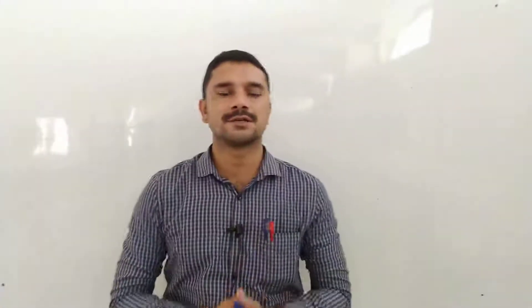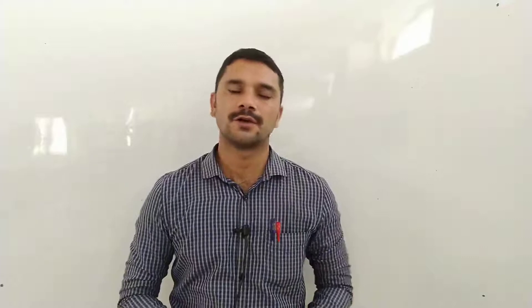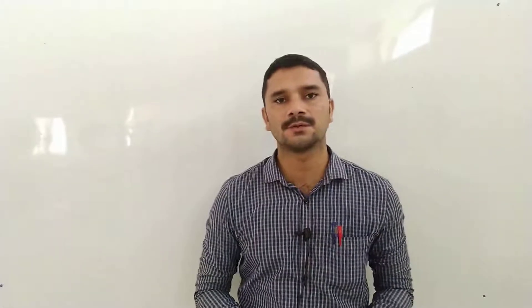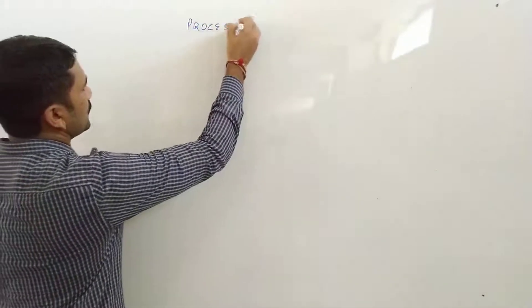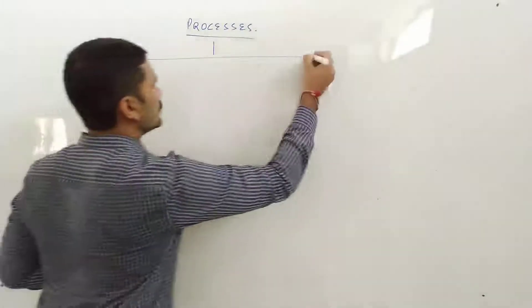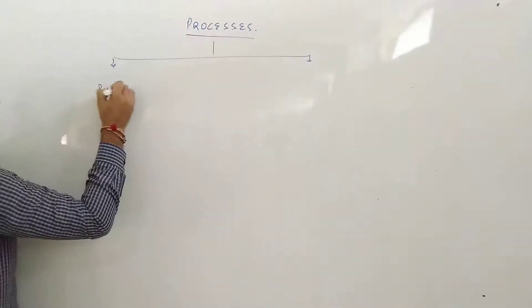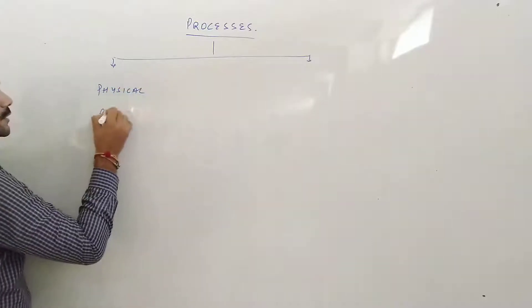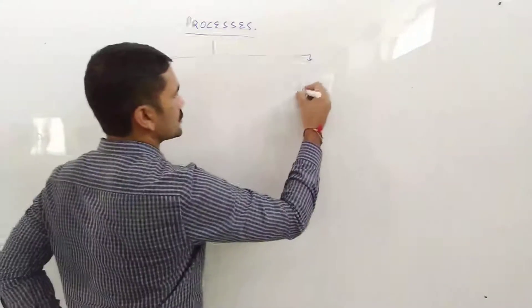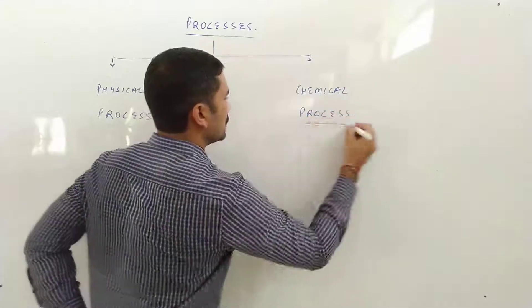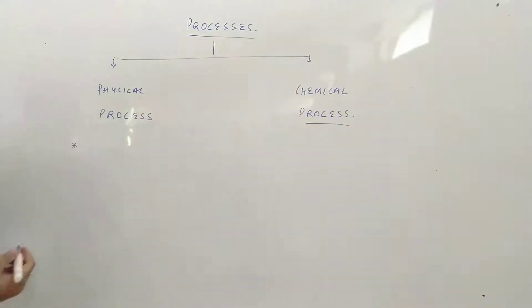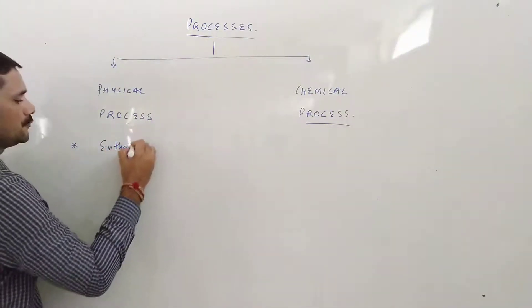Hello students. In the last lecture we were discussing about enthalpy and we started discussion about types of enthalpy on the basis of different types of physical processes taking place in our surroundings. Last lecture mein humne padha ki hamare surrounding mein jo bhi processes hote hain, inko hum do categories mein divide karte hain. First category is physical process and second category is chemical process. Physical process ke basis pe types of enthalpy — usse hum keh sakte hain enthalpy of fusion.